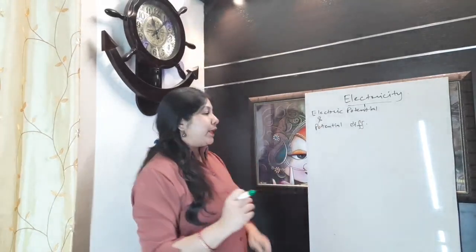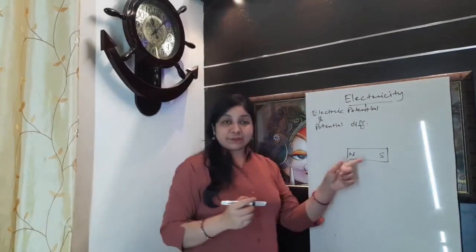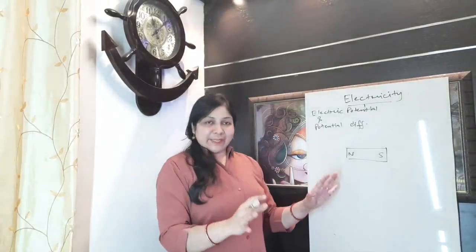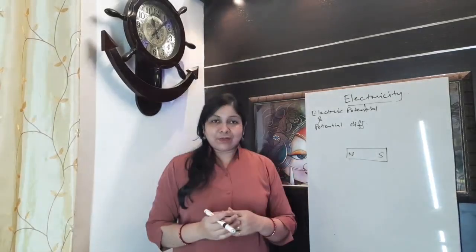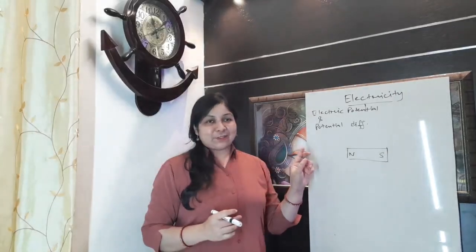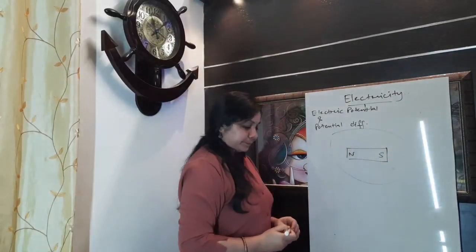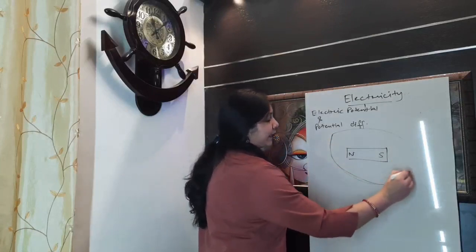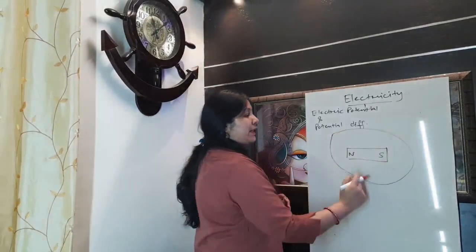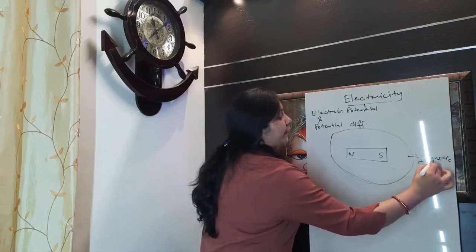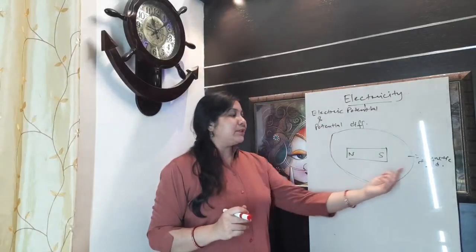Before starting, I am giving you an example. If I have a magnet with two poles — north and south — and I place the magnet in a plane, it creates a field around it. This field is defined as a magnetic field. When you place a magnet in a plane, in front of it, it will produce a field which is defined as a magnetic field.